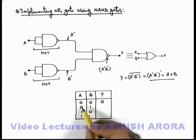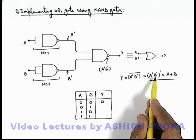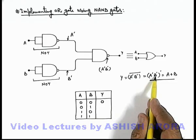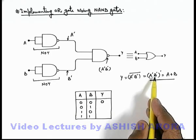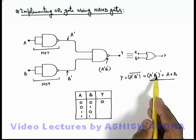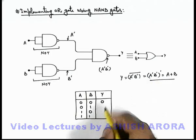Similarly here, if A and B are 0 1, A prime B prime will be 1 and 0. And in this situation, the AND operation of 1 and 0 will be 0, of which the prime will be 1.